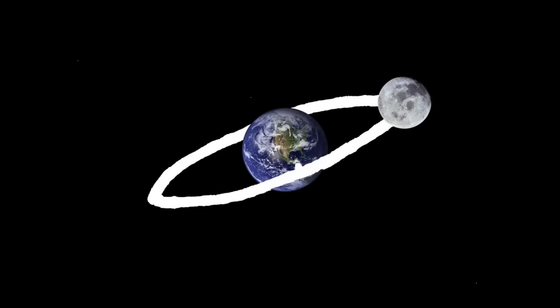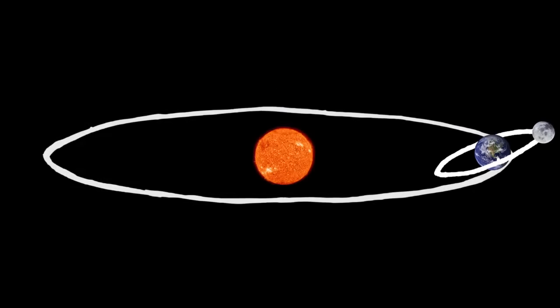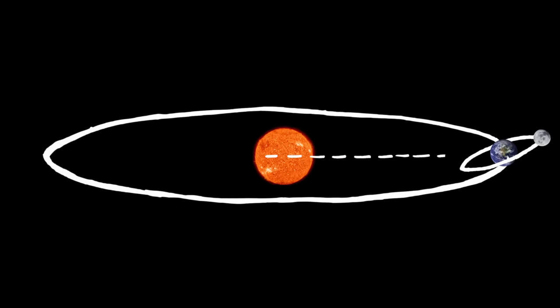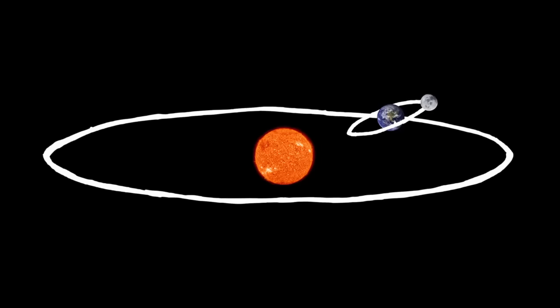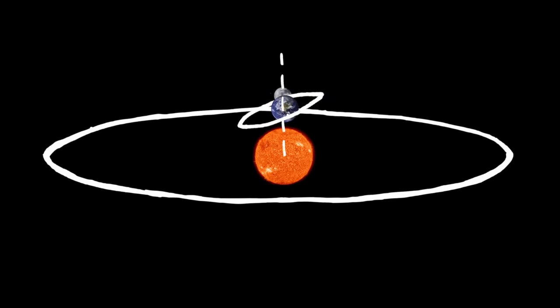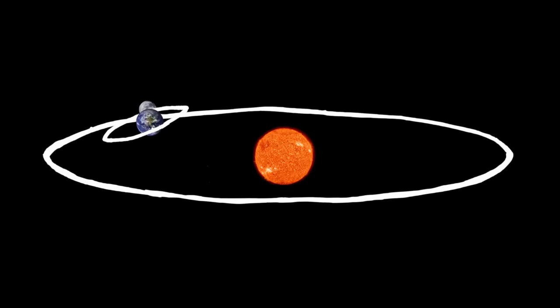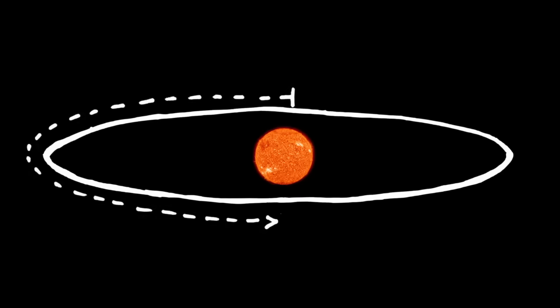So a full moon happens every 29 days or so — then why don't we see lunar eclipses all the time? Well, the orbit of the moon is on a slight tilt compared to the orbit of Earth around the Sun. So at this time of year, when the Earth is between the moon and the Sun, it won't be a direct line between all three. When the Earth moves over here though, the full moon position creates a straight line, putting the moon right in Earth's shadow. The same happens when we move Earth over here. If there are two lunar eclipses in the same year, they happen about six months apart, because that's the time between the correct positions for a lunar eclipse.